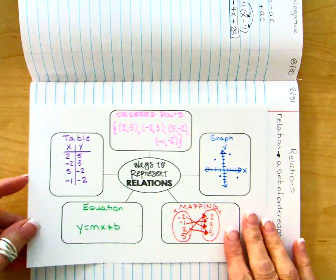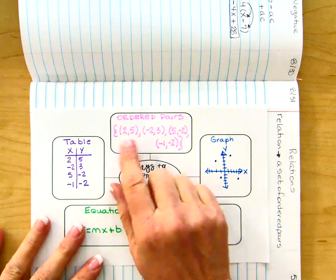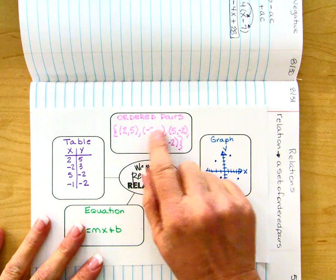Since a relation is a set of ordered pairs, we're going to start out with a set of ordered pairs. Notice I have braces at the end of my list of ordered pairs.